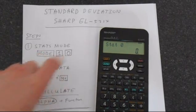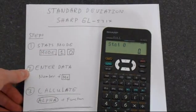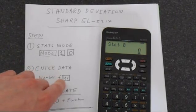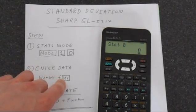So we're now in stat 0 which is what we need. Then we enter the data that we want. To do this you just type in the number and then press M+. M plus is like your save button on this calculator.